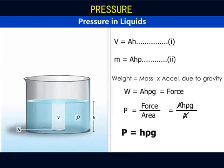For a given liquid, the density is constant, and so is g. For such a liquid, pressure varies with height.